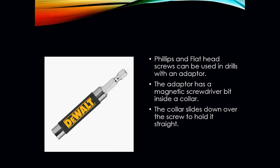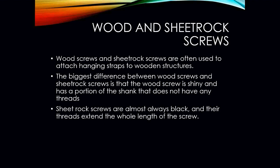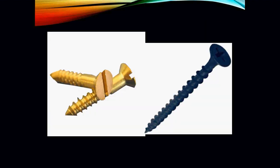Wood and sheetrock screws are often used to attach hanging straps to your wood structure. Remember, you're going to be dealing with branch duct and flexible duct, so you need some means to support that ductwork so it doesn't sag or stress. In some cases you will have to use wood screws or sheetrock screws to get the job done. The biggest difference between these two is that wood screws are shiny and have a portion of the shank with no threads, while sheetrock screws are almost always black and their threads extend the whole length of the screw.